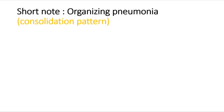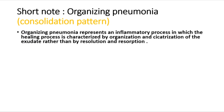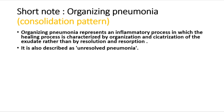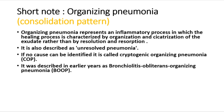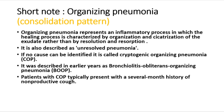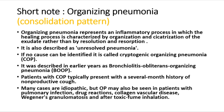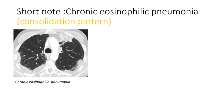Organizing pneumonia represents an inflammatory process in which healing is characterized by organization and cicatrization of exudate rather than resolution and resorption — also described as unresolved pneumonia. When no cause is identified, it is called cryptogenic organizing pneumonia (COP), formerly known as bronchiolitis obliterans organizing pneumonia (BOOP). Patients typically present with a several-month history of non-productive cough. COP may also occur with pulmonary infection, drug reactions, collagen vascular disease, Wegener's granulomatosis, and toxic fume inhalation.